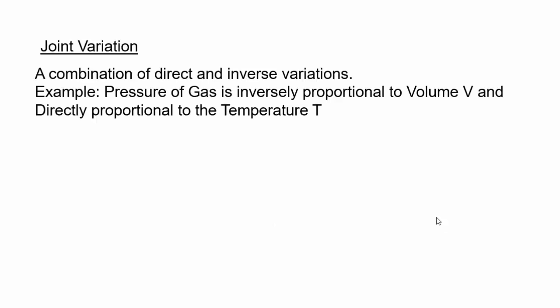Sometimes there is a joint variation, which means that you are looking at a combination of direct and inverse variation. An example of that, we won't do a concrete example, but in chemistry, for example, they know from experiments that pressure of gas is inversely proportional to the volume V of the gas. And at the same time, it's directly proportional to the temperature T.